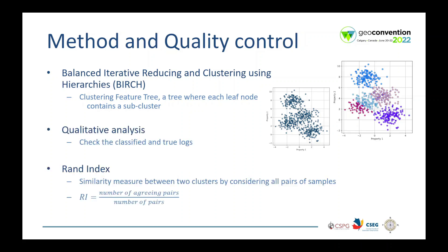To measure the success of the technique, we will do qualitative and quantitative analysis. The qualitative analysis consists in checking the classified and true logs. For quantitative analysis, we will use the RAND index. It measures the similarity between two clusters by considering all pairs of samples, and it ranges from 0 to 1, where 1 is a perfect match.